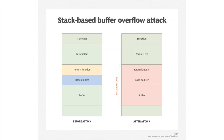The malicious code can actually reside in the buffer itself. So what we can do is write some malicious code into the buffer and then write the address of that malicious code into the return address of the function.